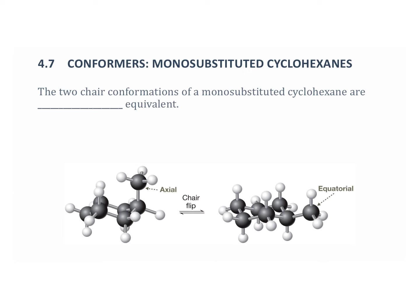Mono just means one. And so what we find here is when that happens, the two chair conformations of the monosubstituted cyclohexane are not equivalent.